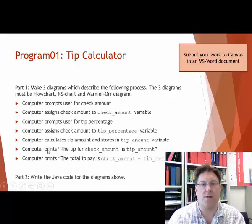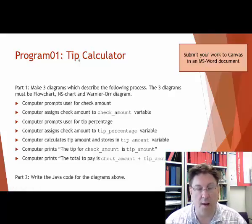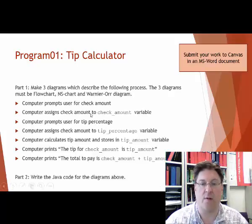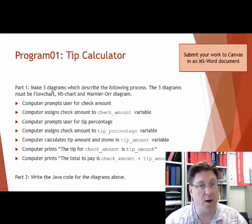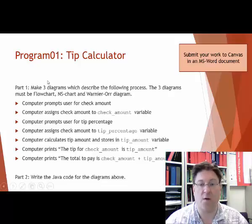Now, let's talk about program one. Program one is going to be a tip calculator. I want you to write a program that computes the tip and the total for a given check that you would have at a restaurant or some kind of service or anything. So, part one, I want you to make three diagrams. I won't make you do three diagrams every time, but on this one, I want to see all three of them. This is focusing heavily on diagrams, this assignment. So, I want to see three diagrams, a flow chart, an NS chart, and a Warnier-Orr diagram that accomplishes the steps that you see right here.